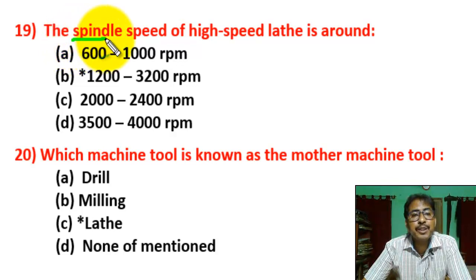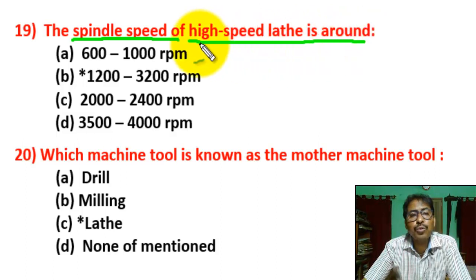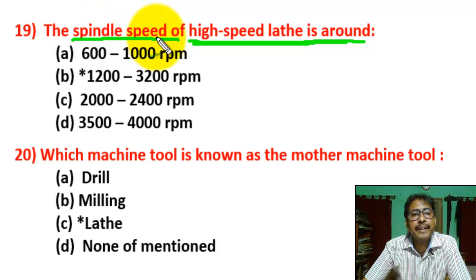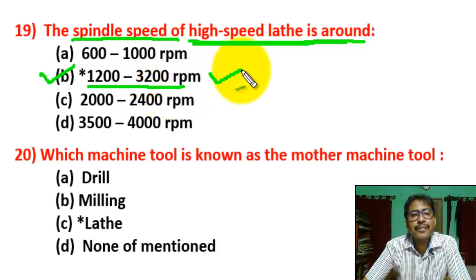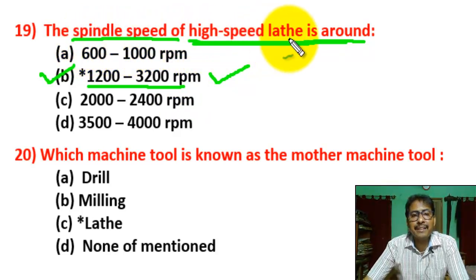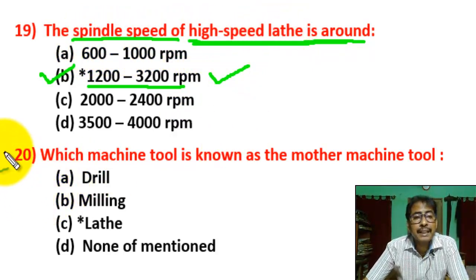Question number 19: the spindle speed of a high speed lathe? There are four options. Correct answer is B — 1200 to 3200 RPM. This is the spindle speed of a high speed lathe.